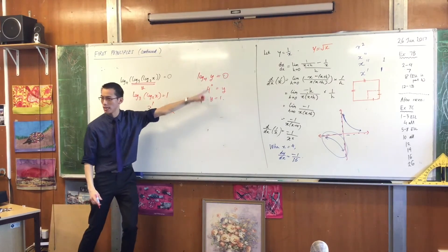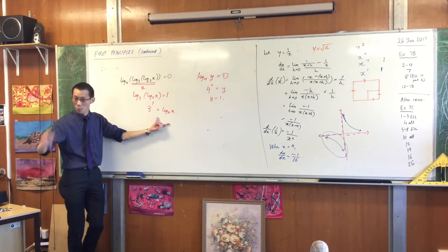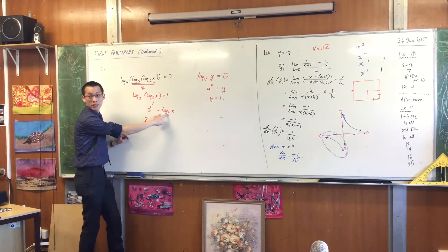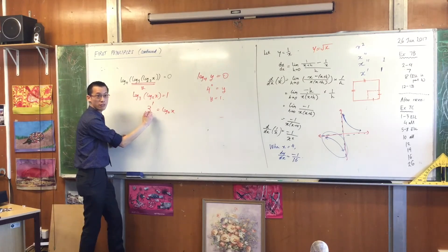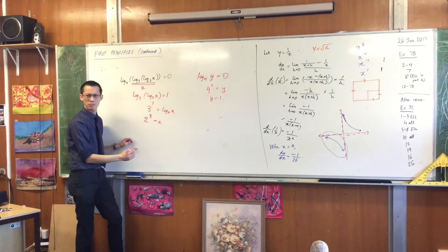This will be 3 to the power of 1 equals log base 2 of x. Just like the y ended up over there, log base 2 of x has ended up over here. Now I've just got to go one more level, so it's going to be 2 to the power of 3. Happy?